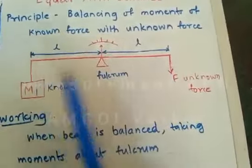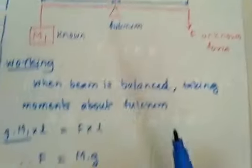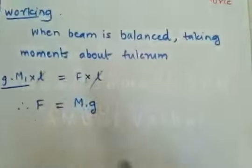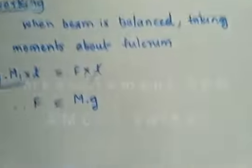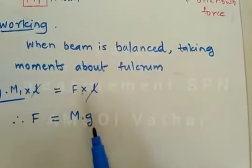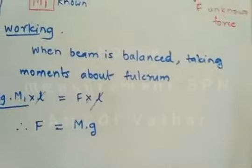moment due to force F and distance L between the fulcrum and the force. Now, because the distance L on both sides of the fulcrum is the same, it will get cancelled. Therefore, the unknown force is equal to the known mass times g, acceleration due to gravity.